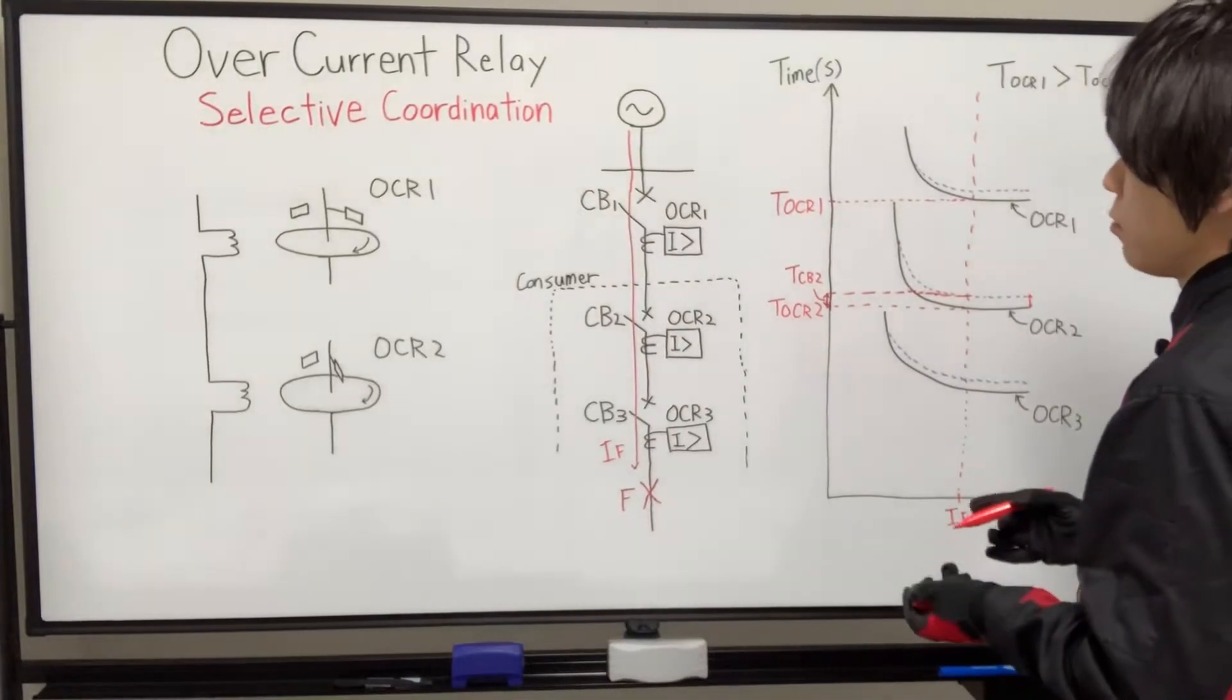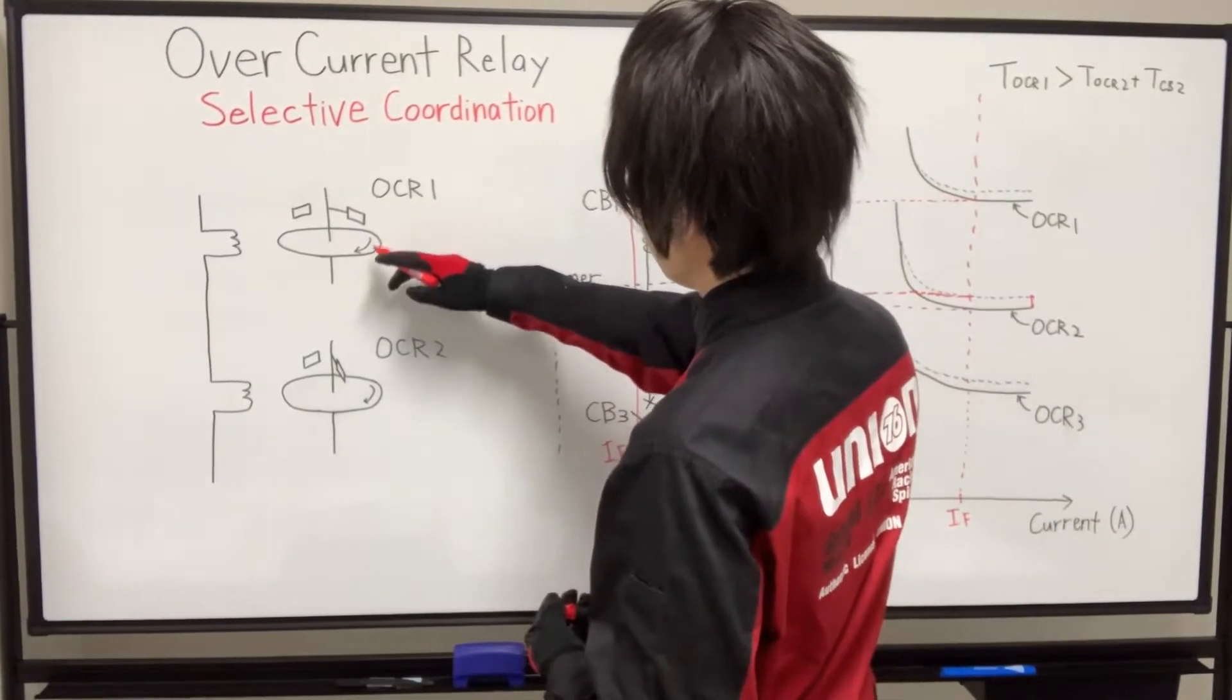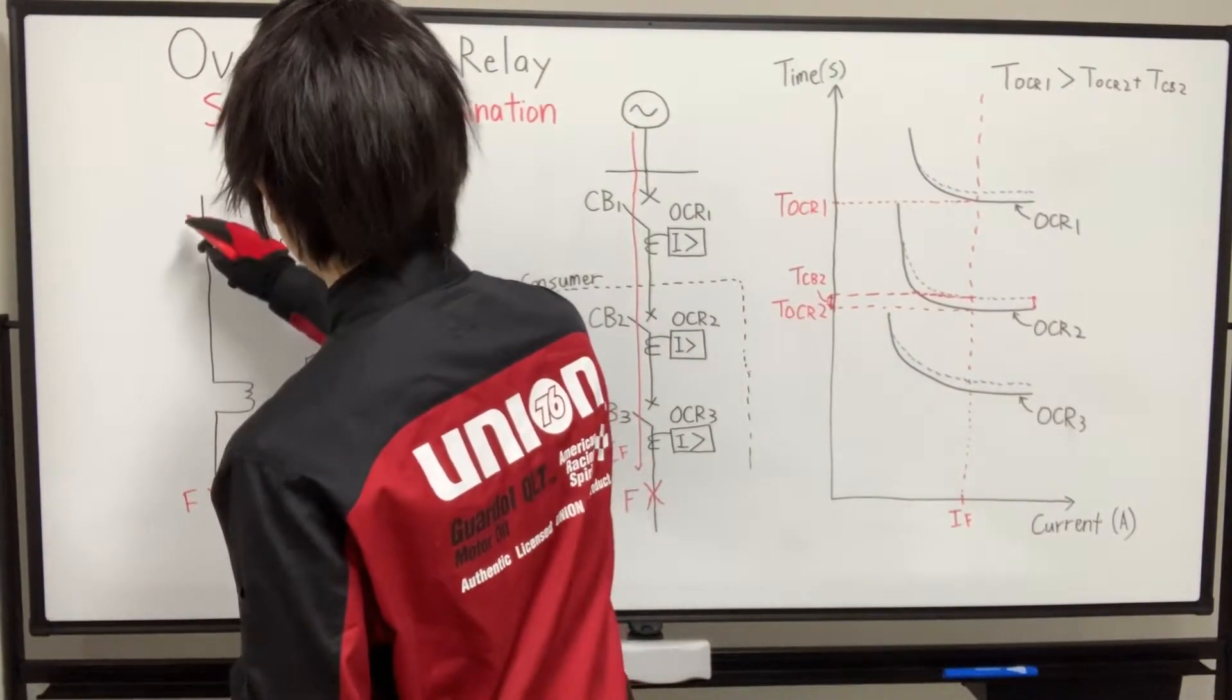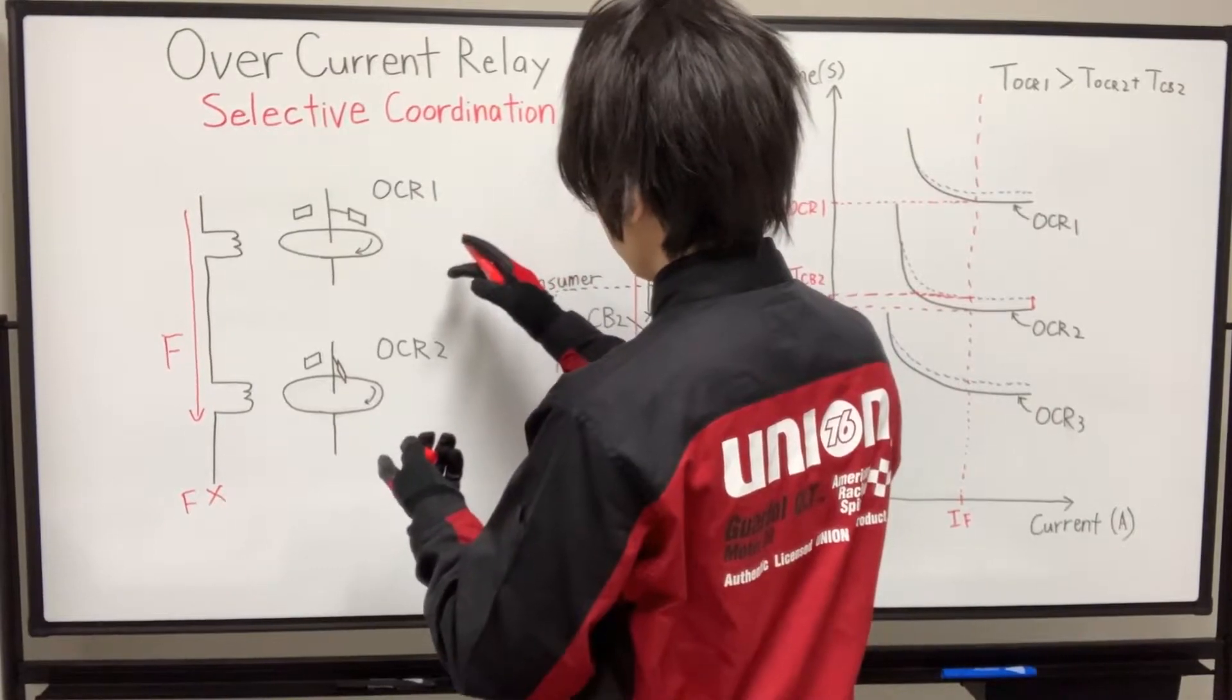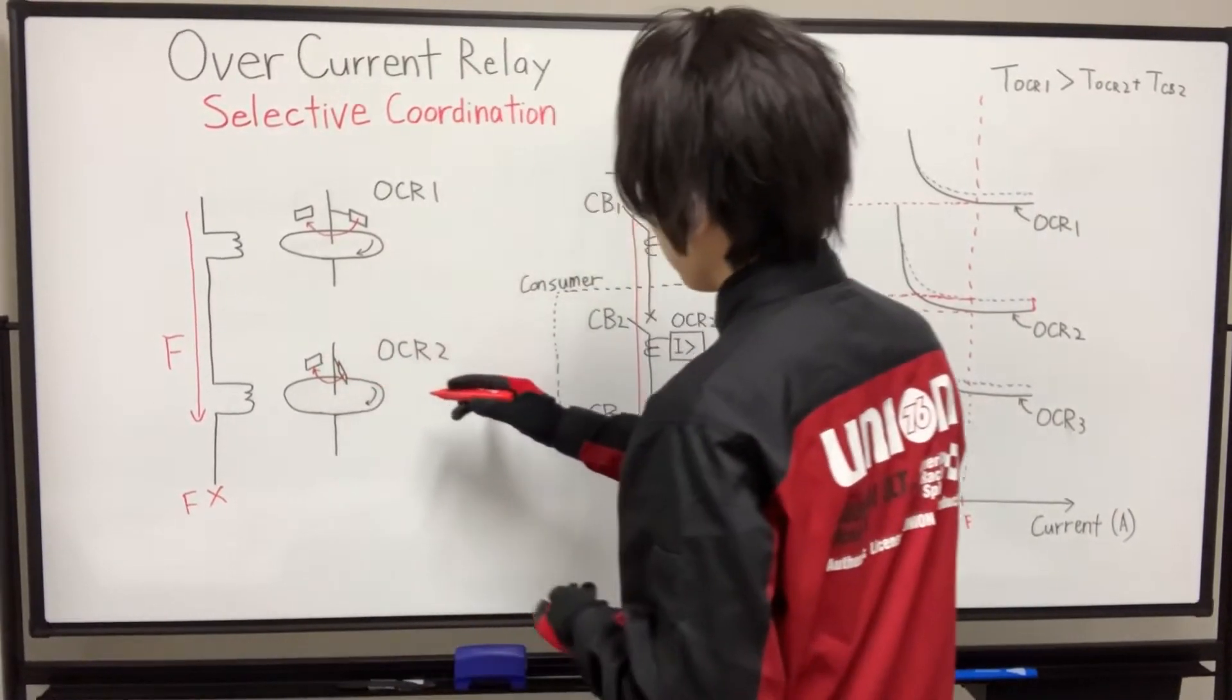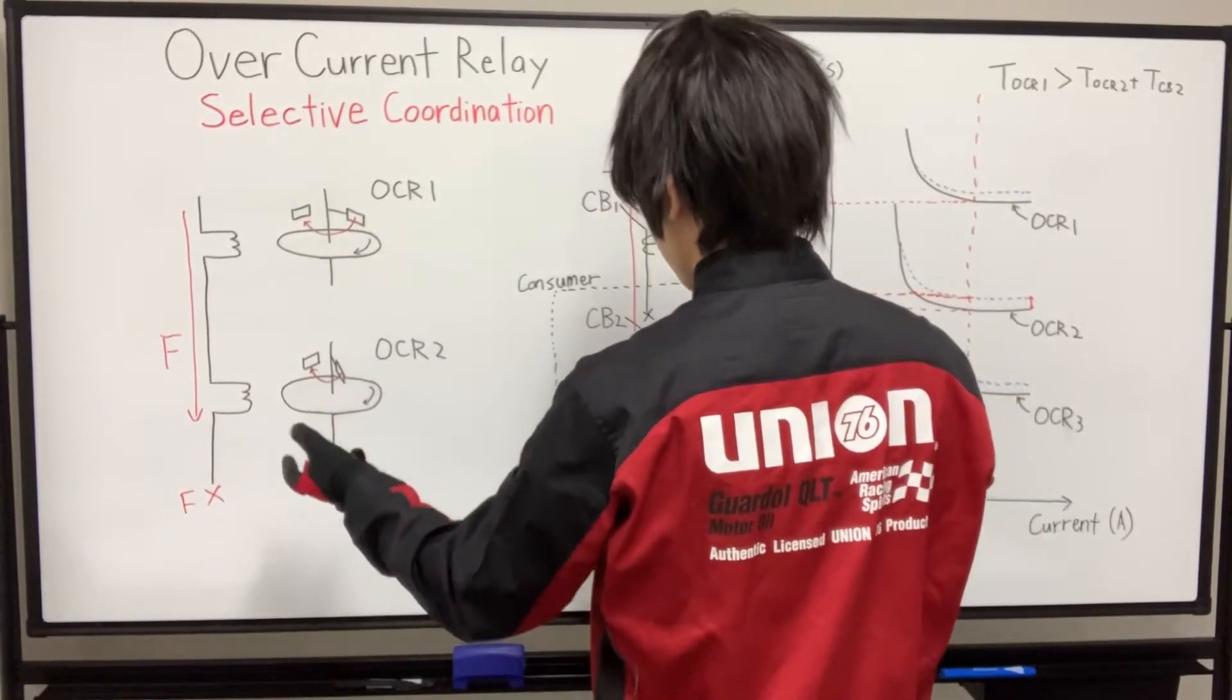So let's see what is happening at each overcurrent relay while fault current is flowing this line. This is overcurrent relay 1's induction disk and this is relay 2's induction disk. So while fault current is flowing here, each disk starts to rotate simultaneously at the same time. And you can guess relay 2 operates first because this fixed and moving contact distance is shorter than relay 1's. So relay 2 will operate first.